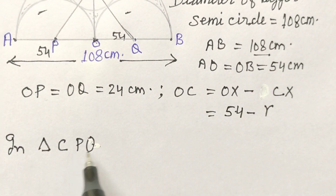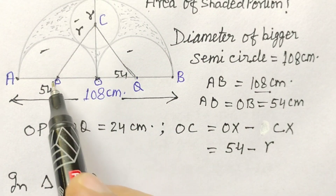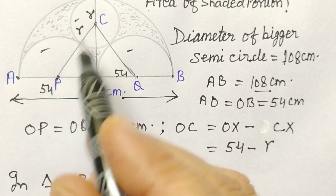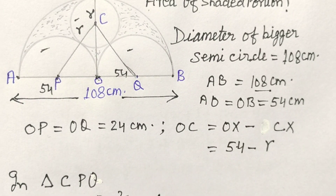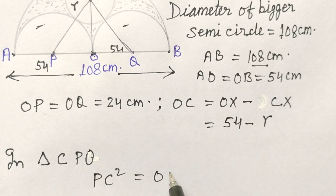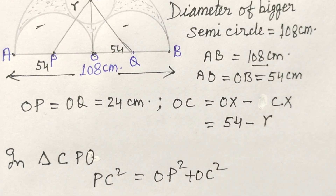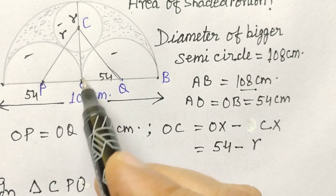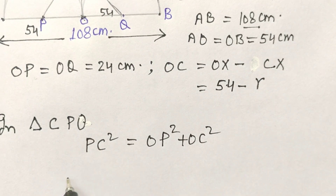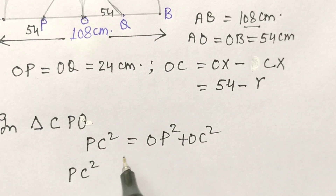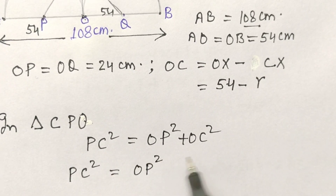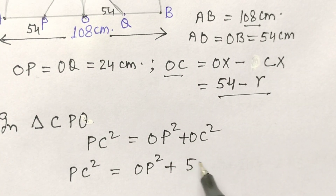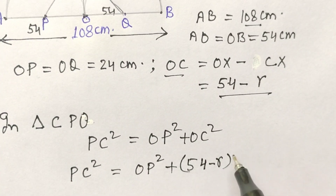If we consider triangle CPO, then PC² is equal to OP² plus OC². So PC² equals OP² plus (54 minus R)².